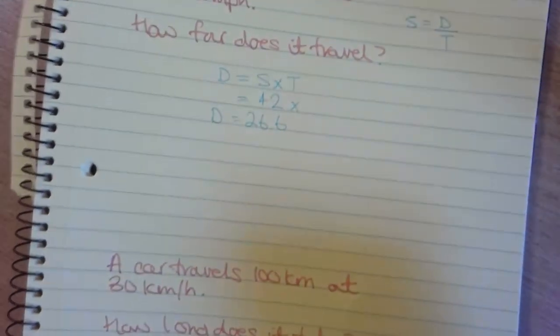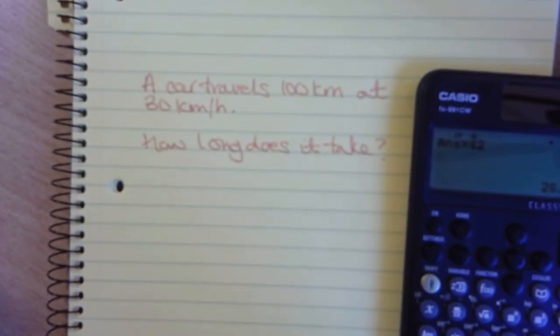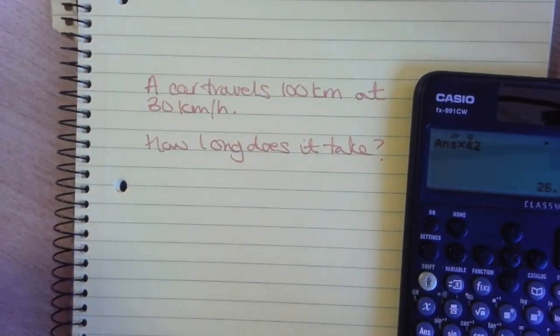Now we can also use this if we get an answer that's in time. So if a car travels 100 kilometers at 30 kilometers per hour, how long does it take?